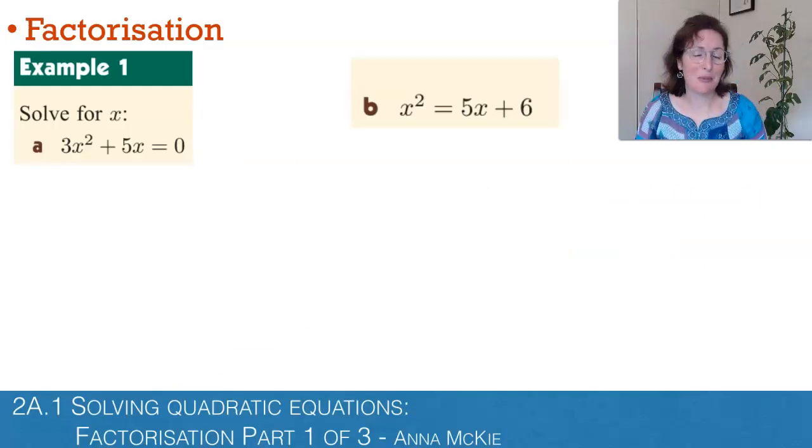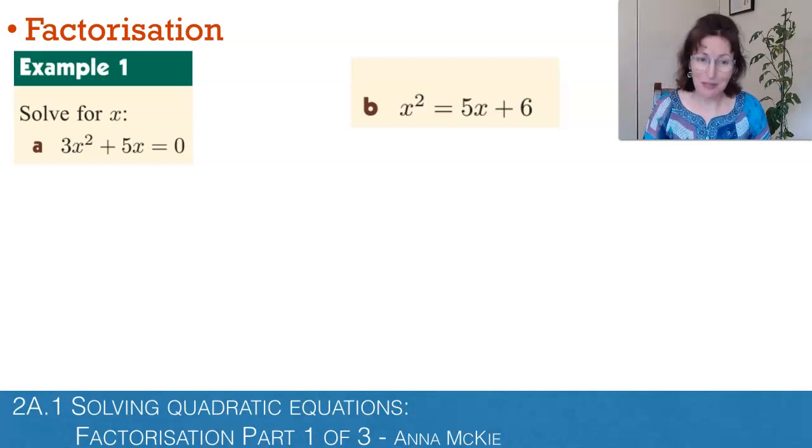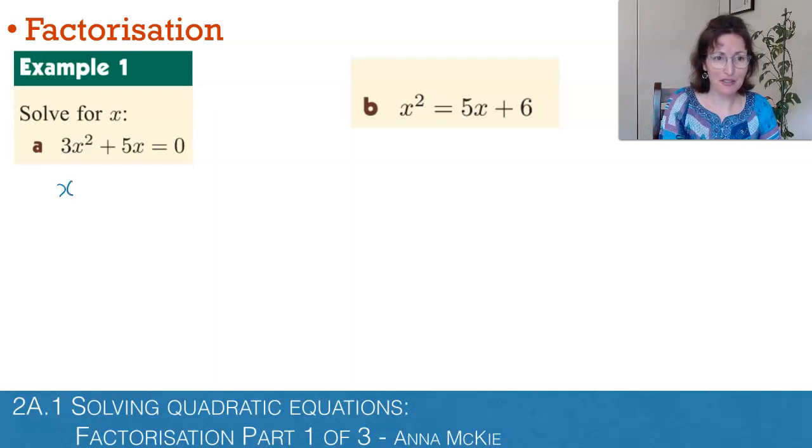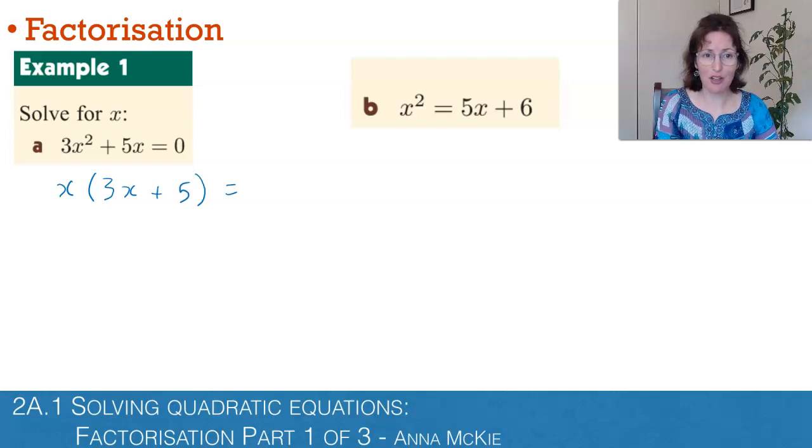I'd love you to be writing these examples down and doing them with me. The first step whenever we do factorization is always look for a common factor. In this first one we have one, which is x. So we're going to factorize that out and write what's left over in each term. When we factorize out an x here, we're left with 3x in the first term and 5 in the second term, all equal to zero.